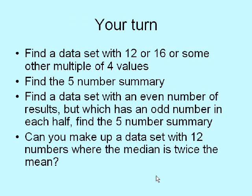Your turn: find a data set with 12, 16, or some multiple of four values and find the five-number summary. Then find a data set with an even number of results which has an odd number in each half, and find the five-number summary of that one. Finally, if you're in for a challenge, can you make up a data set — get a spreadsheet and make one up — with 12 numbers where the median is exactly twice the mean?